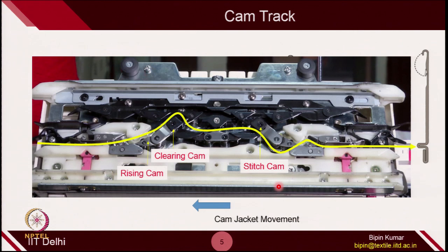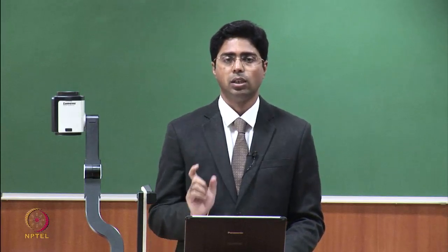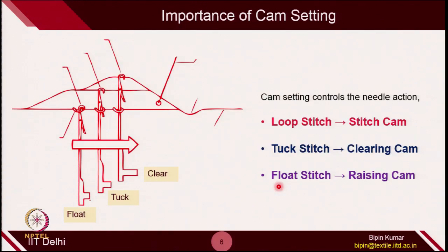Direction of carrier movement — from left to right and right to left — and specifying the relative cam roles is extremely important in fabric designing. In case of float, the needle just follows a straight path; it will not rise. It will simply remain idle on the machine, catching its old yarn.